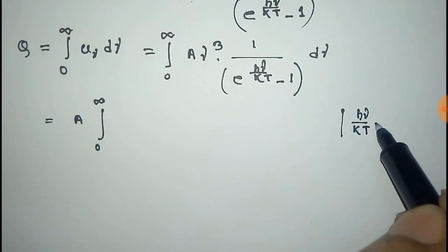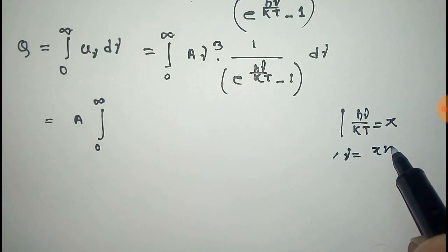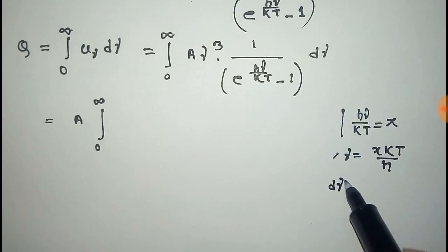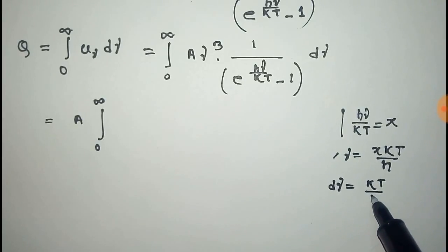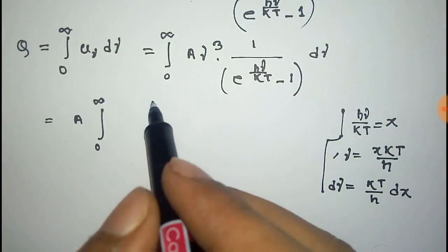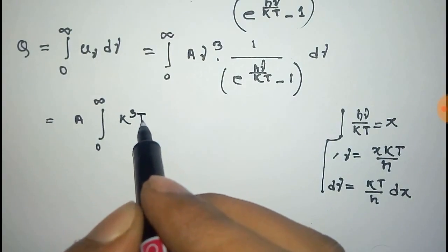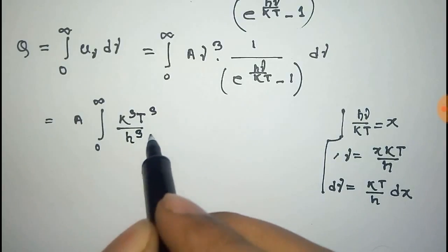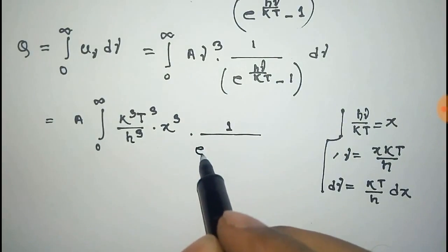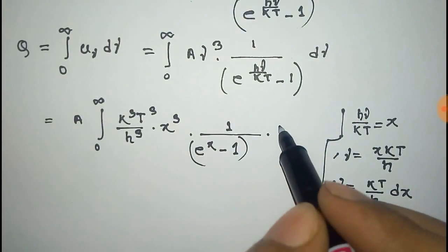So ν = xkT/h. Differentiating, we get dν = (kT/h) dx. Substituting, ν³ becomes (k³T³/h³)·x³, and (e^(hν/kT) − 1) becomes (e^x − 1), and dν = (kT/h)dx.